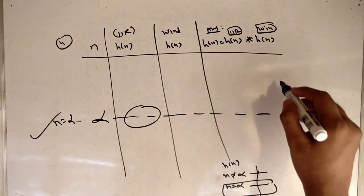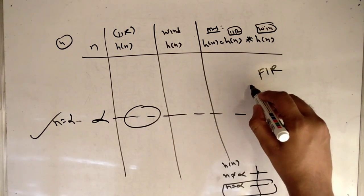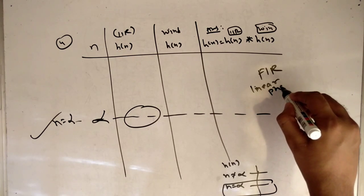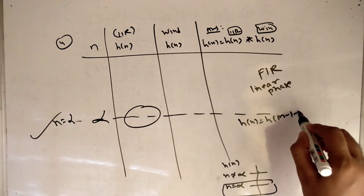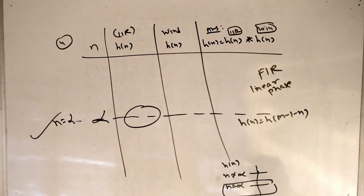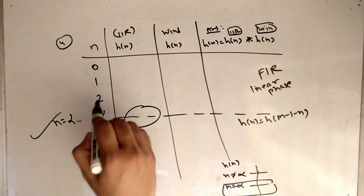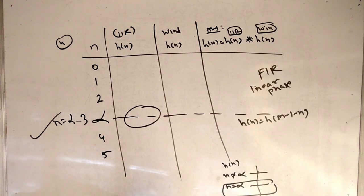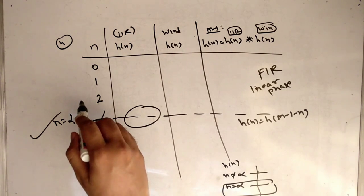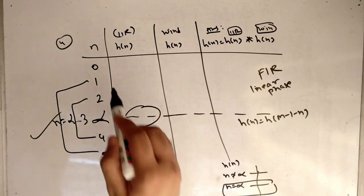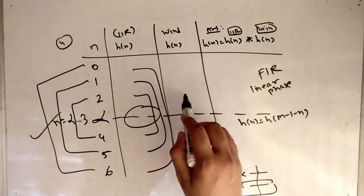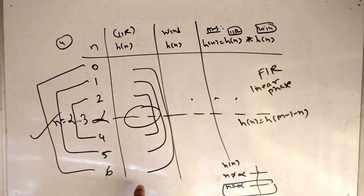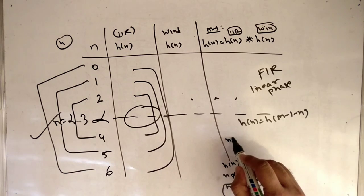If the question states it is an FIR window with linear phase, then H of N equals H of (M minus 1 minus N). This means values are symmetric: for example, with N going from 0 to 6, positions 2 and 4 are the same, 1 and 5 are the same, and 0 and 6 are the same.